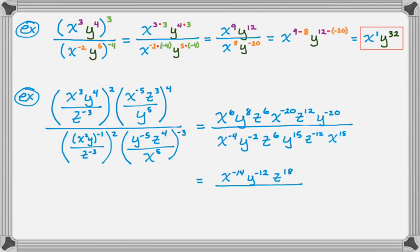Now let's work on just the denominator. x to the negative 4th and x to the 15th give x to the 11th. y to the negative 2nd and y to the 15th add to give y to the 13th. z to the 6th and z to the negative 12th give z to the negative 6th. Now I have just a quotient: x to the negative 14th over x to the 11th — subtracting exponents — gives x to the negative 25. y to the negative 12th over y to the 13th gives y to the negative 25. z to the 18th over z to the negative 6 gives z to the 24th.